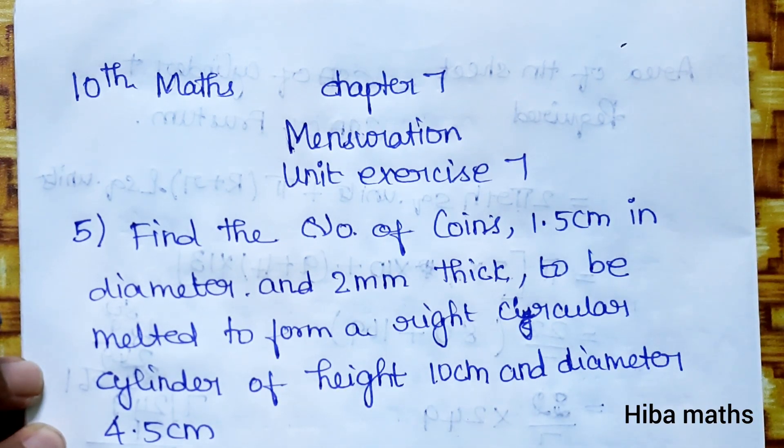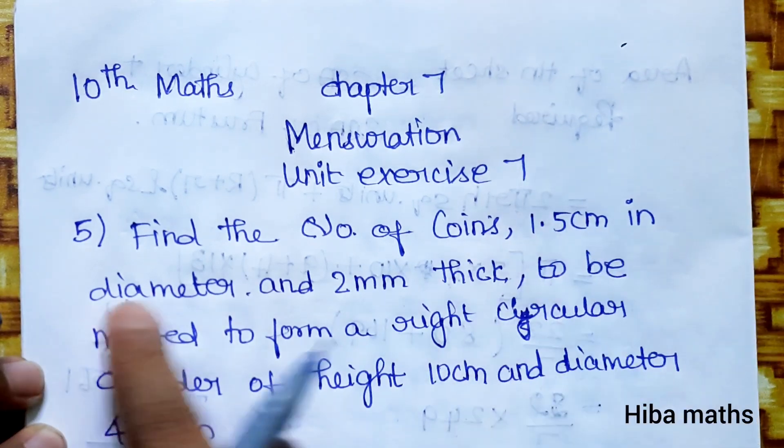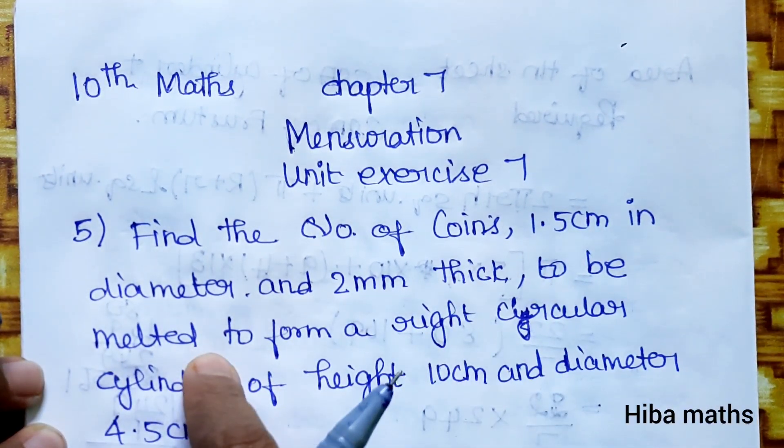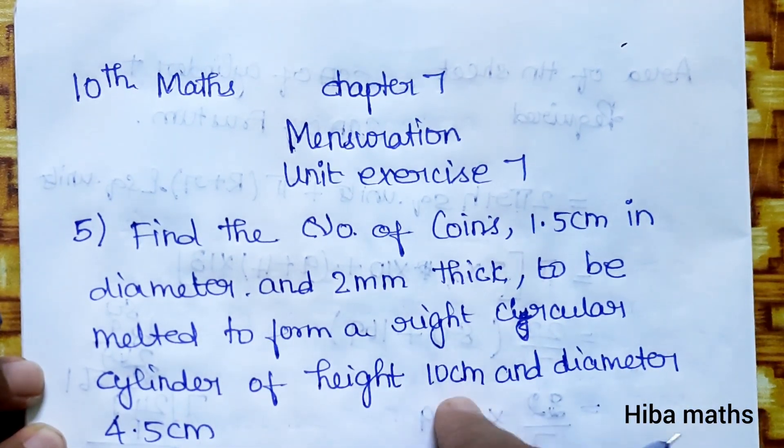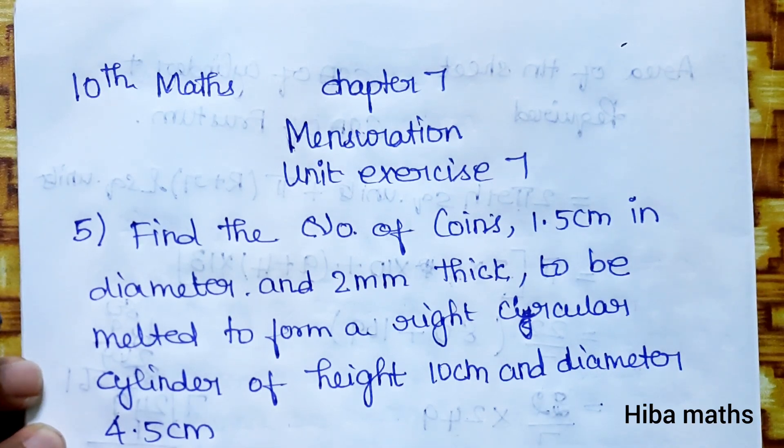Hello students, welcome to Hiba Maths, 10th standard Maths, Chapter 7 Mensuration, Unit Exercise 7, fifth question. Find the number of coins 1.5 centimeter in diameter and 2mm thick to be melted to form a right circular cylinder of height 10 centimeter and diameter 4.5 centimeter.